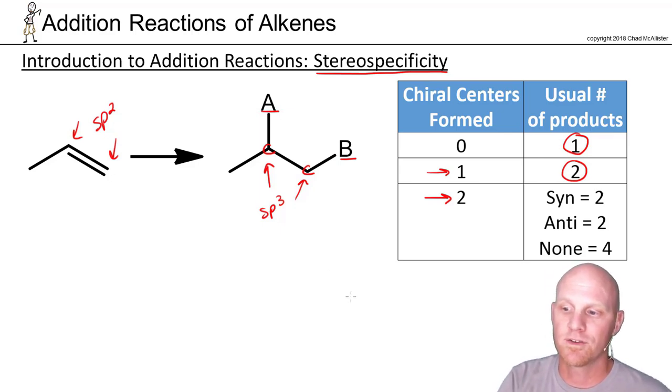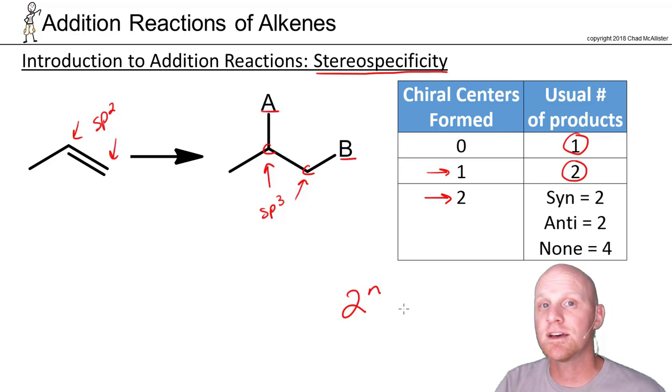So if you recall, maximum possible number of stereoisomers is 2 to the N. So when you form two chiral centers, four stereoisomers could exist, but your reaction may not form all four. So it turns out there's what's called syn addition. Syn addition is if the two groups you add both add on the same face, like both wedges, both dashes, essentially. Anti addition, notice don't confuse that with anti-Markovnikov, that's different. Anti addition is where the two groups you add add to opposite faces, like one a wedge, one a dash. So that's anti addition.